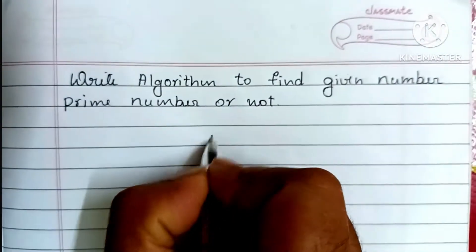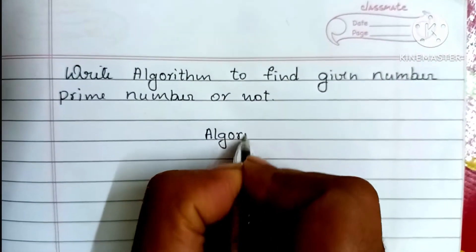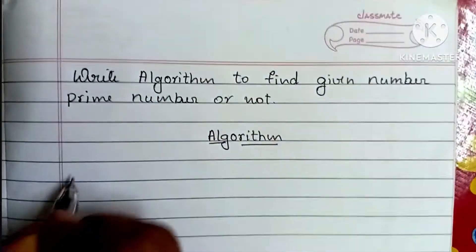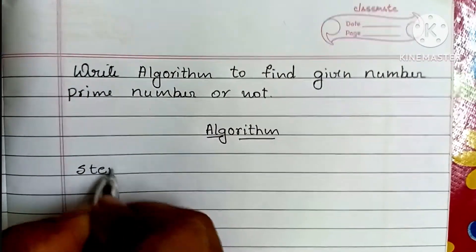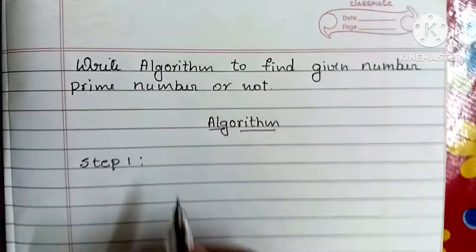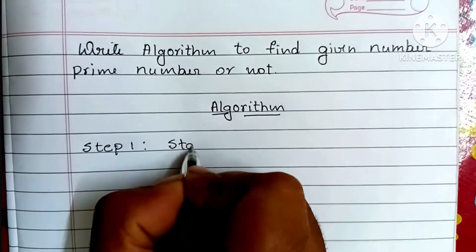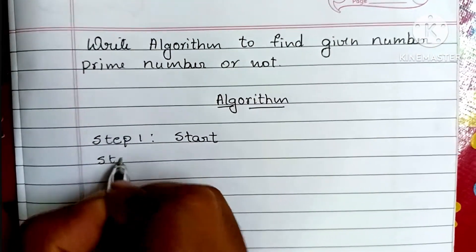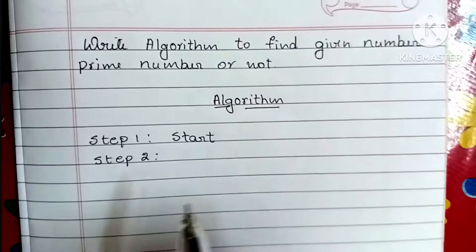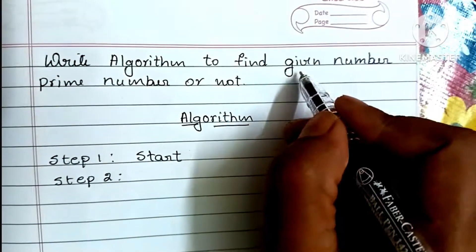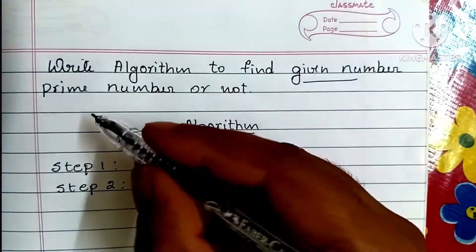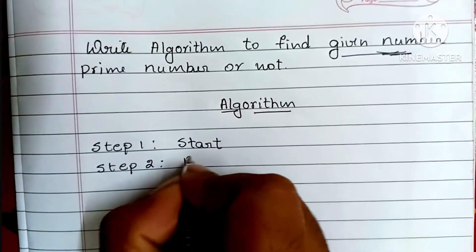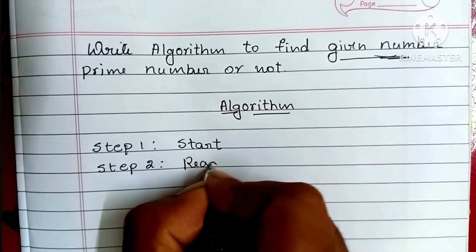We will write an algorithm — an algorithm is a step-by-step process to solve a problem. Step 1: an algorithm always starts with a start statement, so we write start. Step 2: we have to read the input variable. Here we need to find if a given number is prime or not, so we read a number — that is, read N.